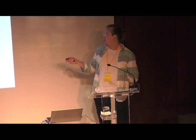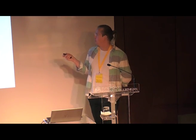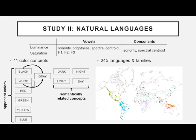So we have luminance and saturation on the color side, and we wanted to compare those with sonority, brightness, spectral centroid, and the first three vowel formants for vowels, and sonority and spectral centroid for consonants. We then sampled ten color concepts: the six oppositional color concepts defined by Kay, McDougal, and others; grey as a common combination of black and white; as well as the semantically related concepts dark, light, night, and day. We gathered words for all these from 245 languages and families to get a nice global sample.